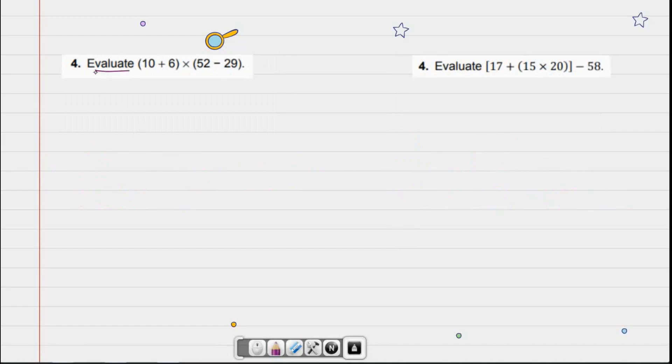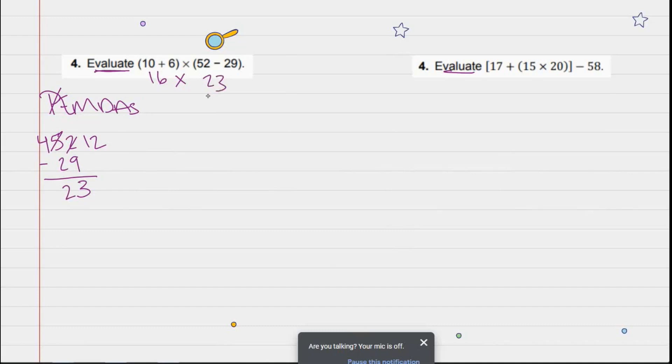Evaluate. So now we're going to find the value. (10 + 6) × (52 - 29). What do we do first? Let's write PEMDAS so I can follow the order of operations. We have parentheses, so we're going to start there. 10 + 6 is 16. Multiplied by... 9 is too large to be taken away from 2, so I need to borrow. That turns into 4, that turns into 12. 12 - 9 is 3, and 4 - 2 is 2. Now I have 23.